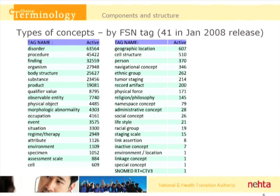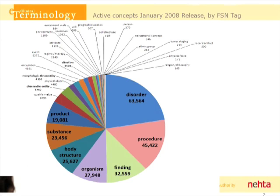If we look at it from a pie chart standpoint, the largest hierarchies are really disorders, procedures, findings, organisms, and body structure — which includes anatomy and morphology — as well as substances, which would be drug ingredients, and products, which would be drugs. If you take those hierarchies, that represents the bulk of SNOMED CT. For each of those we're talking tens of thousands of different codes that need to be organized, so it's a very large terminology.